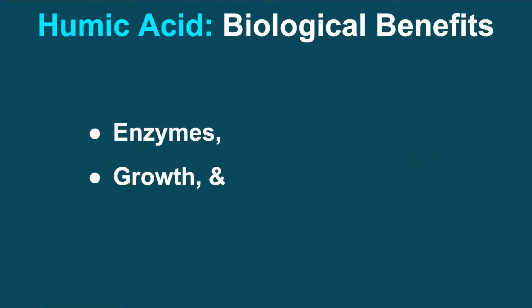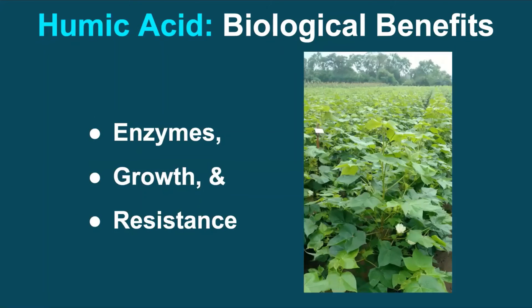Biologically, humic acid stimulates the plant and the activities of microorganisms. It produces plant enzymes that enhance the natural resistance of plants against diseases and pests.